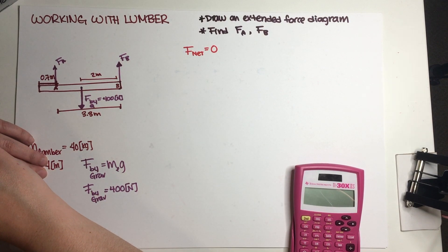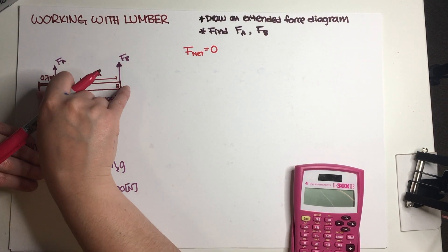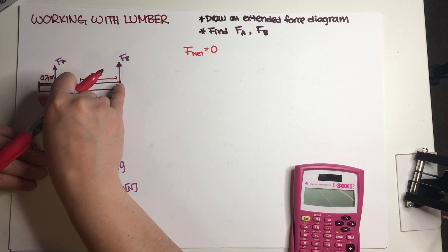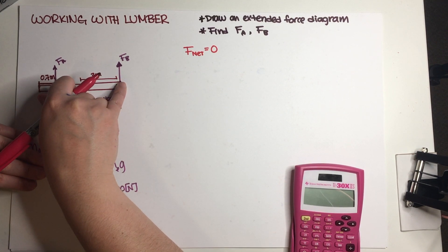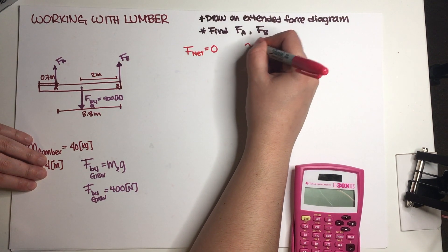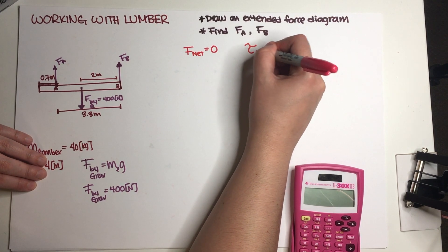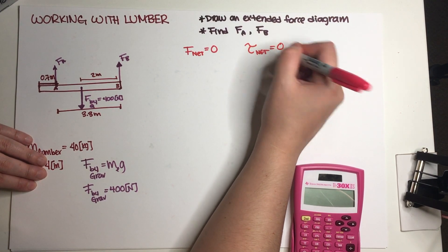Now we also know that the lumber is not rotating, so they're holding the lumber still. So because the lumber is not being rotated, then that means that the net torque on the lumber is equal to zero.